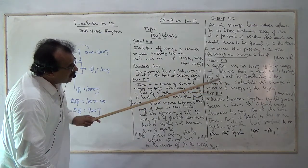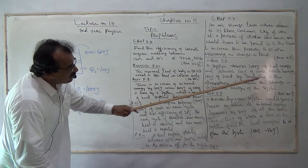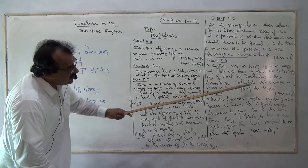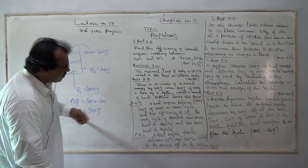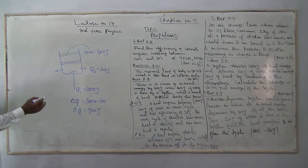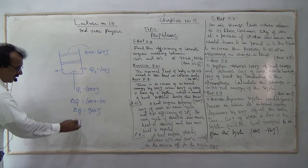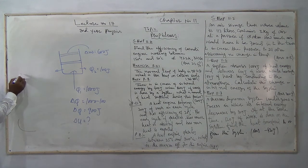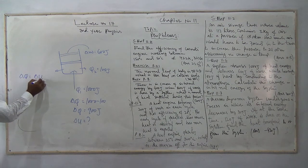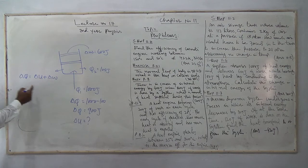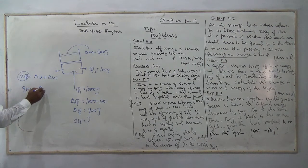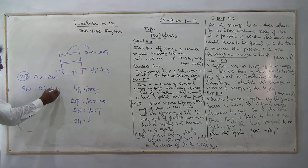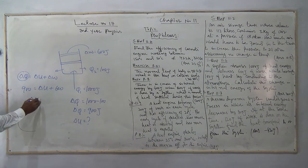The system absorbs 100 Joules of heat by conduction to the atmosphere. Calculate the change in the internal energy of the system. We will use the first law to find the internal energy change: delta Q equals delta U plus delta W.